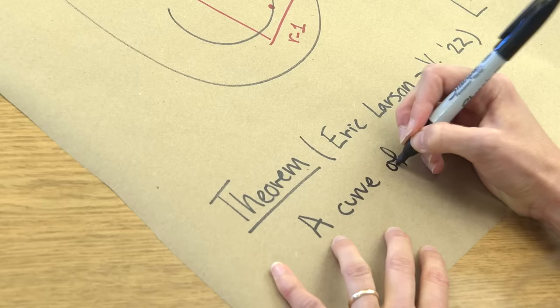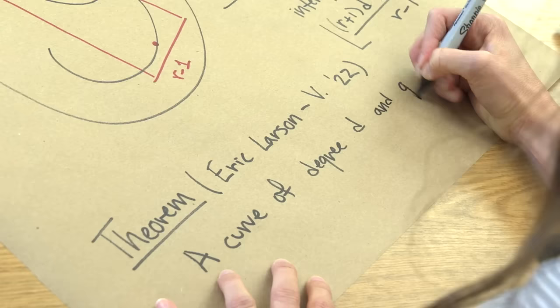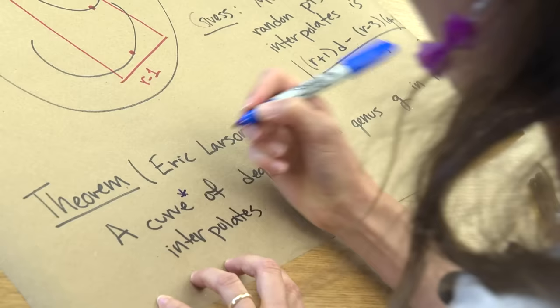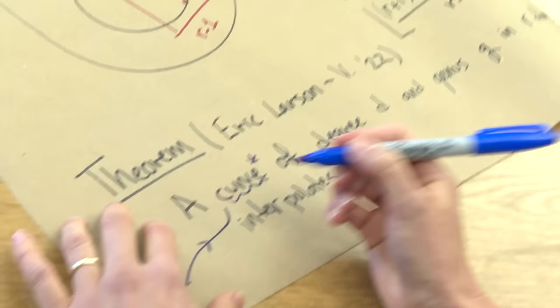So here's a theorem that I proved with my collaborator Eric Larson from last year. A curve of degree d and genus G in r dimensions. Let me put one little star here because I actually have to restrict the type of curve that I'm considering.